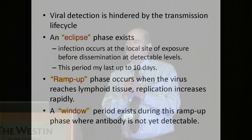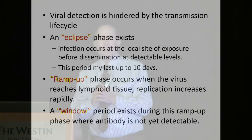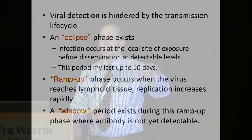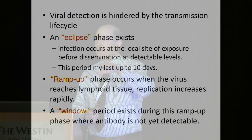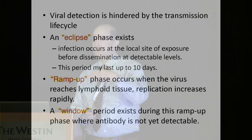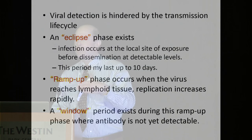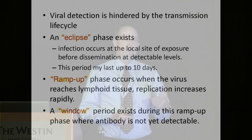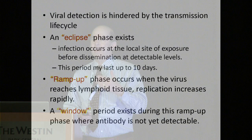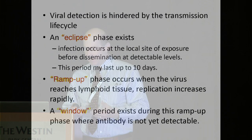Detecting the virus or antibody to the virus can be difficult because from the time of infection until detection is not hours or minutes — it's days to weeks. With fourth-generation testing, it may still be up to a couple of weeks before infection is detected. This is referred to as the window period, where the virus is present but no antibody is yet detectable.